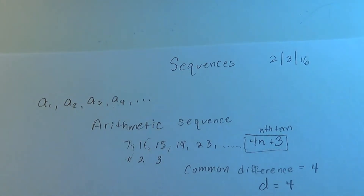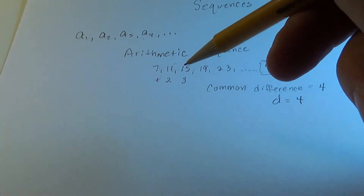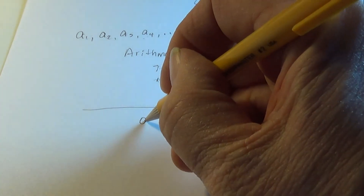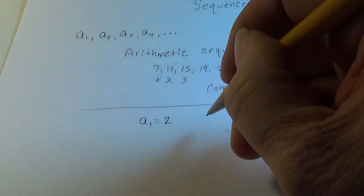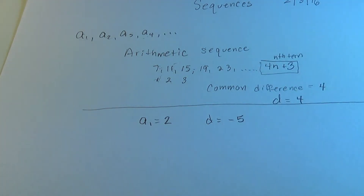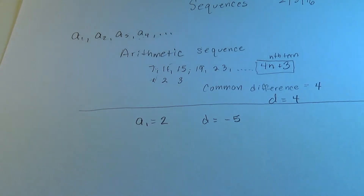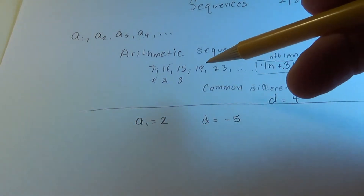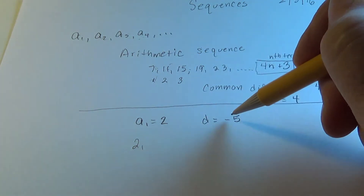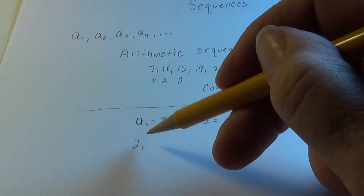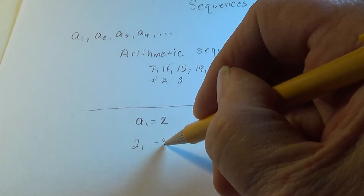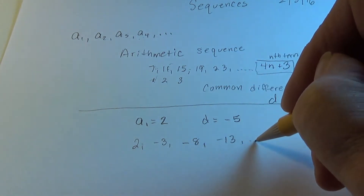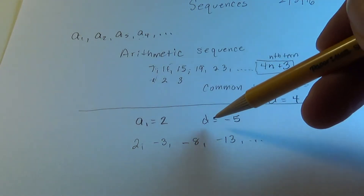Let's practice. Say a sub 1 is 2 and the common difference is negative 5. Generate 4 terms of this arithmetic sequence. We start with 2. Adding negative 5 gives negative 3. Adding another negative 5 and another after that gives us our four terms. I want you to understand that common differences can be negative — it's just adding a negative number.